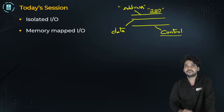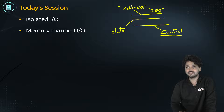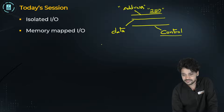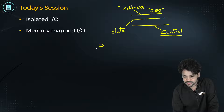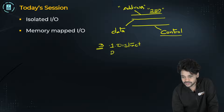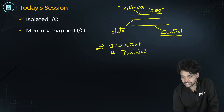The control bus carries a control command. Now, the total bus system can be organized in three ways. The first one is distinct IO, the second one is isolated IO, and the third one is memory mapped IO.